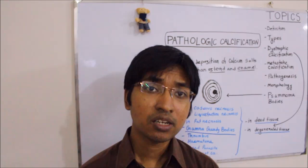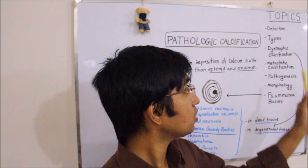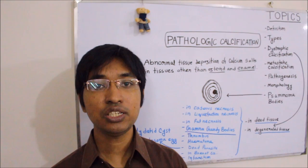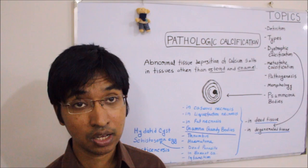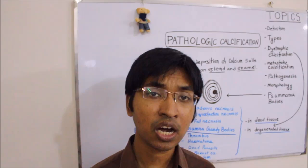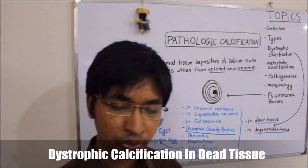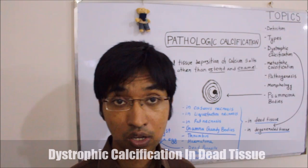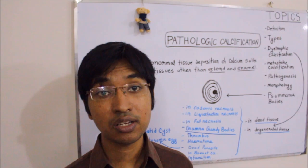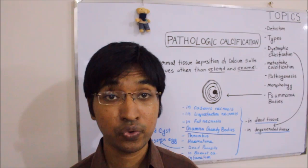Now we will begin with dystrophic calcification. Dystrophic calcification can occur either in dead tissue or in degenerated tissue. The first example of dystrophic calcification occurring in dead tissue is in caseous necrosis — particularly in caseous necrosis of tuberculosis, there may be calcification, and that calcification will be of dystrophic type.